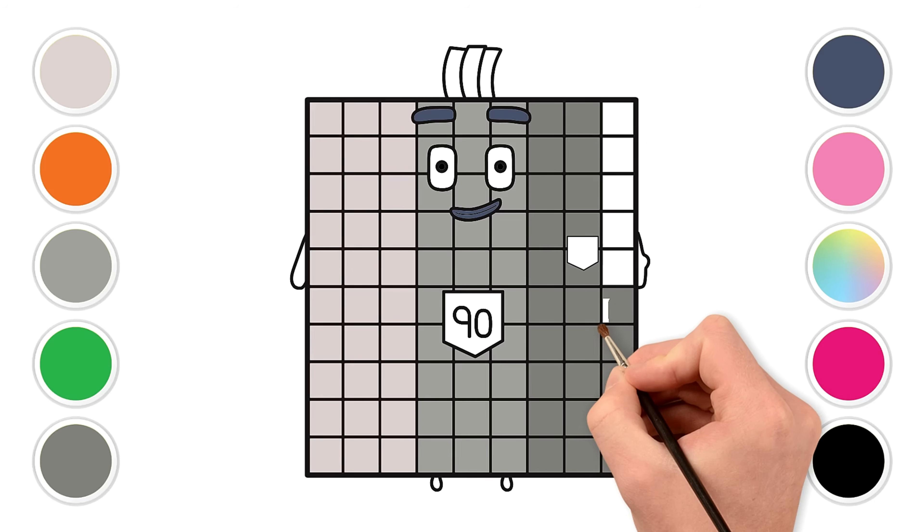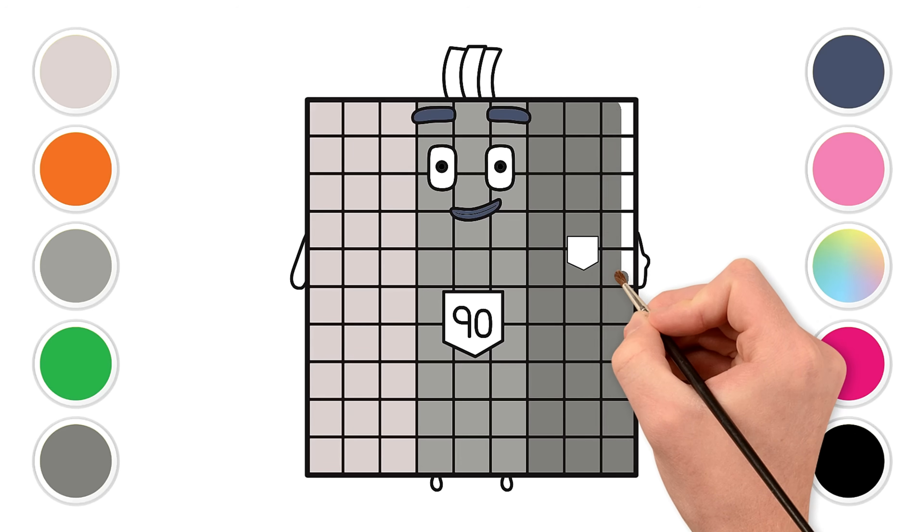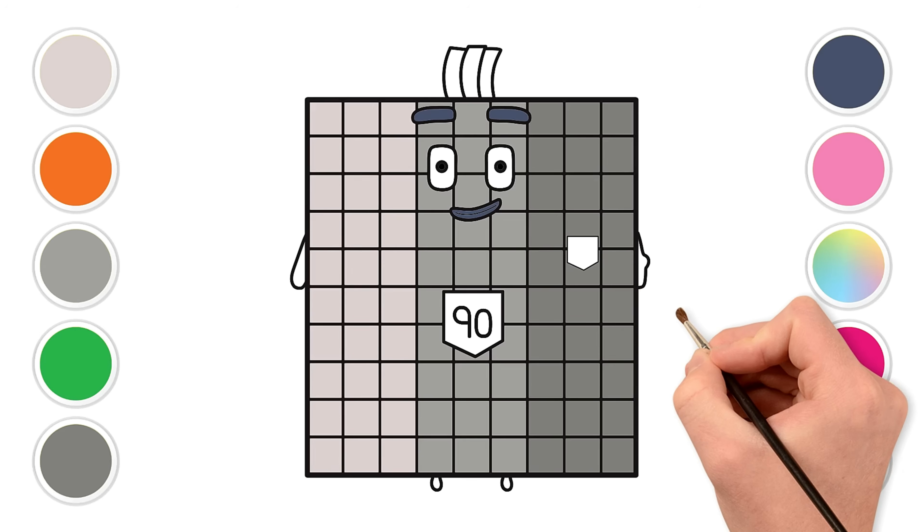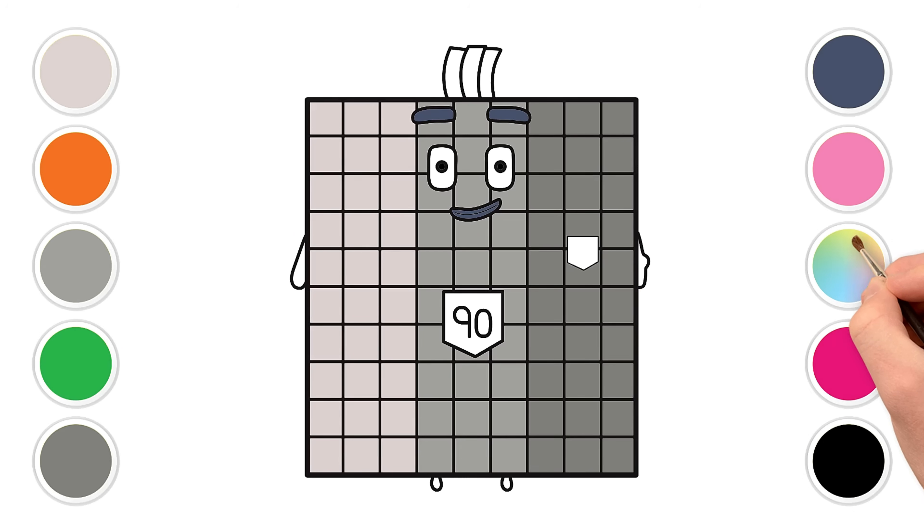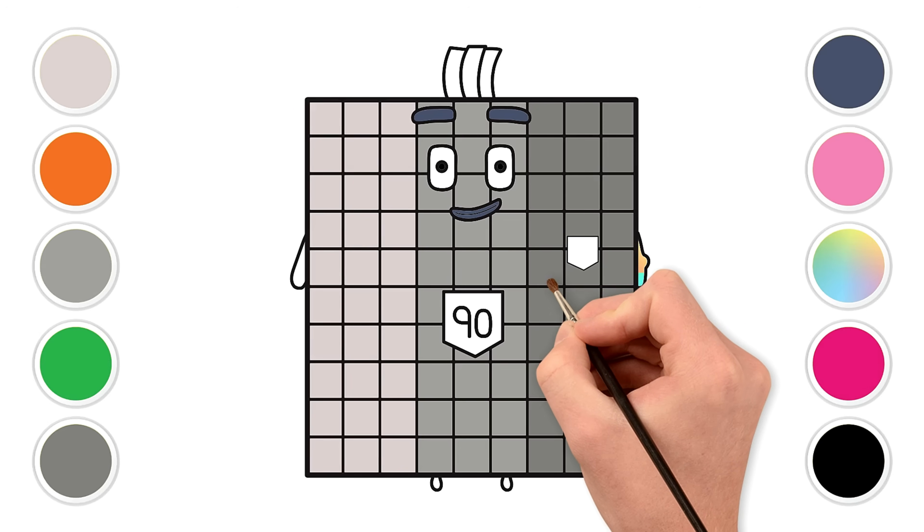NumberBlock 90's gradient gray body is complete. Now use soft rainbow colors like pastel pink, mint green, baby blue, gentle peach. Color his arms and legs using these soft rainbow tones. You can mix these in creative ways to color his arms and legs.